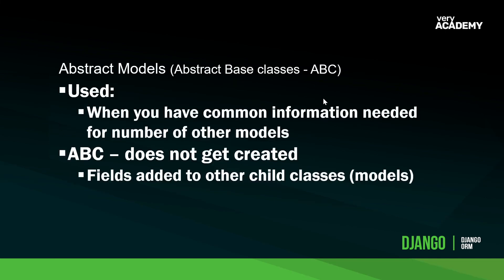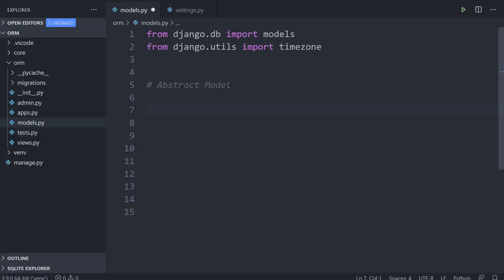Starting with abstract models — here you create multiple tables. The first is your abstract base class (ABC). From the abstract base class, you define certain fields, and then you create child classes connected to it. Those child classes inherit all those fields. The abstract base class doesn't get made in your database — it's simply there for reference. It's the child classes that get created in the database. This is better understood by giving you an example.